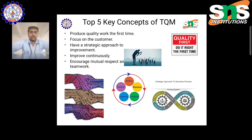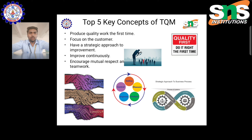Second is focus on the customer — we must enrich and follow customer expectations. Third, having a statistical approach to improvement means that if any change happens in the customer, product, or supplier, we can attain parallel factors easily. Fourth, improve continuously — in a repeated and regular process, we must find continuous improvement at each stage of manufacturing across every sector. Fifth, encourage mutual respect and teamwork — if the production, quality, and maintenance teams work toward a common goal, that goal becomes predictable and easily attained. These are the top five key concepts of TQM. Thank you.